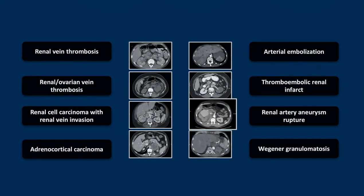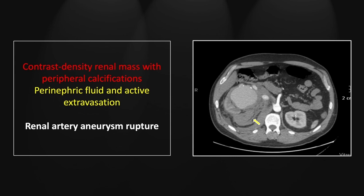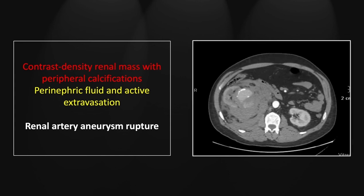Our next case is a renal artery aneurysm rupture. You can see here continuity between the right renal artery, which is markedly expanded and tortuous, and this homogeneous enhancing mass with peripheral calcifications denoting a vascular structure. Note also there is extensive perinephric fluid, which is slightly hyperdense, suggestive of hemorrhage. More inferiorly, you can again see that homogeneous enhancing mass with peripheral calcifications, and there is also an ill-defined collection of contrast density consistent with extravasation.